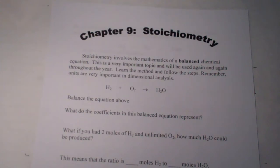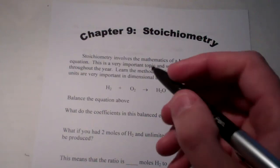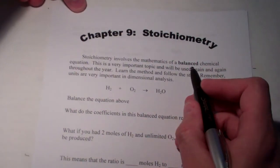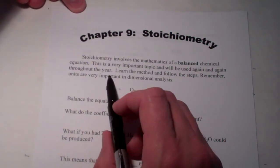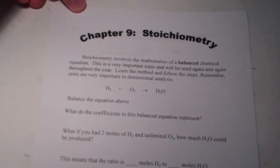A lot of this involves being able to write and balance equations and a little bit of dimensional analysis. First of all, stoichiometry involves the mathematics of a balanced chemical equation. It's a very important topic, and we use it over and over again throughout the year. Please learn the method and follow the steps. Remember, units are very important when we do dimensional analysis.